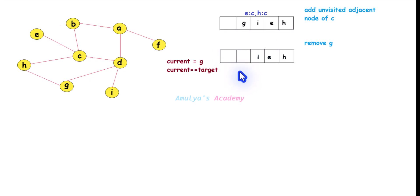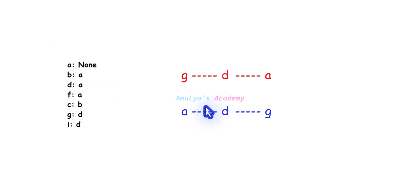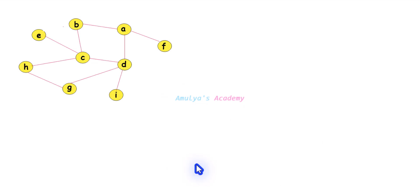Remove G from the queue and check whether it is the target node — yes, G is the target node! Then find its parent node. Parent node of G is D, parent node of D is A, and parent node of A is none — that is the starting node. Reverse it: A, D, G. This is the shortest path. In this way we can find the shortest path between two nodes using BFS algorithm.